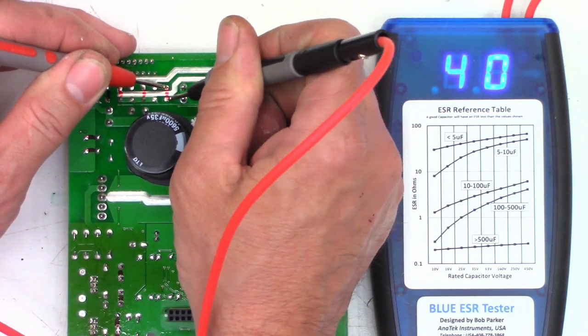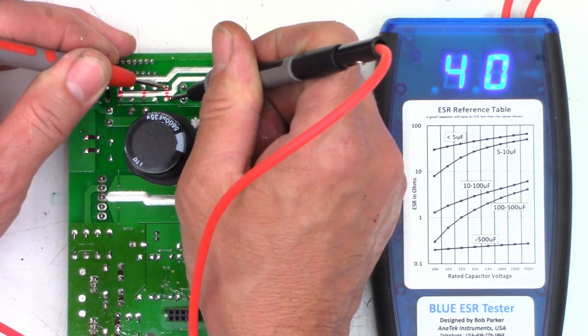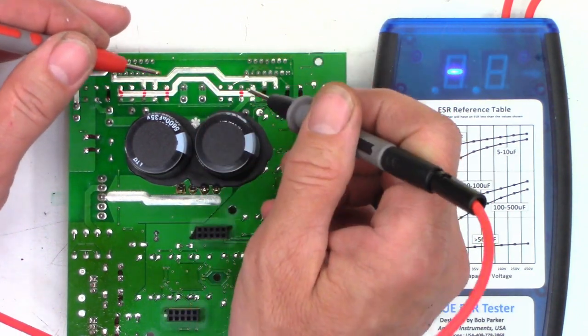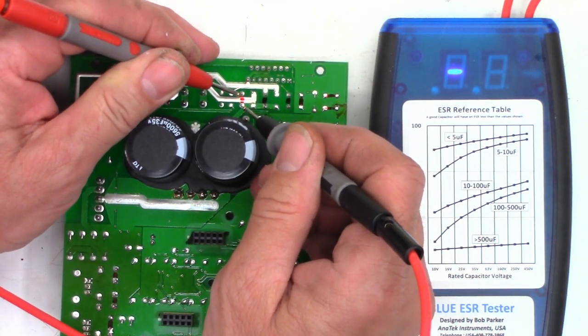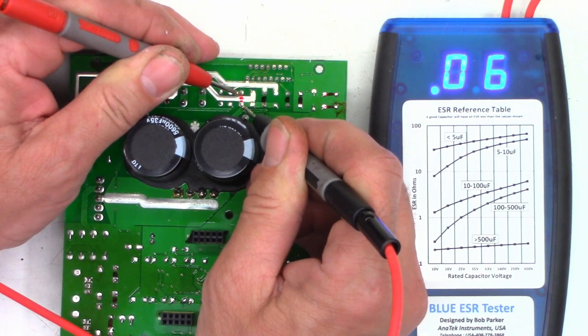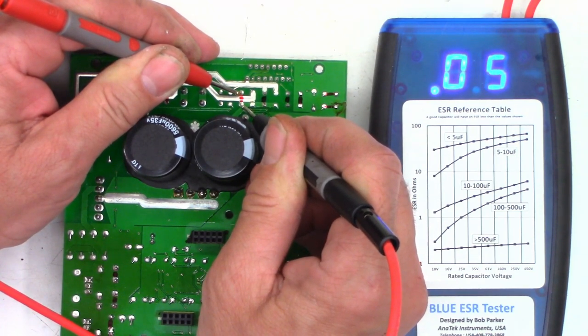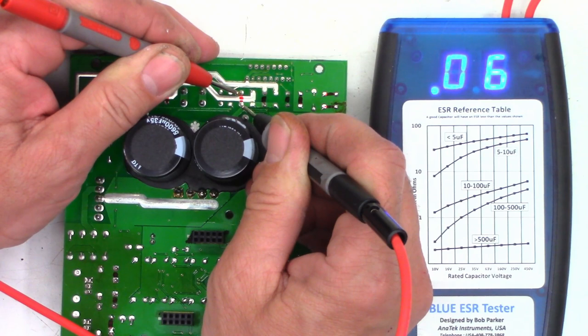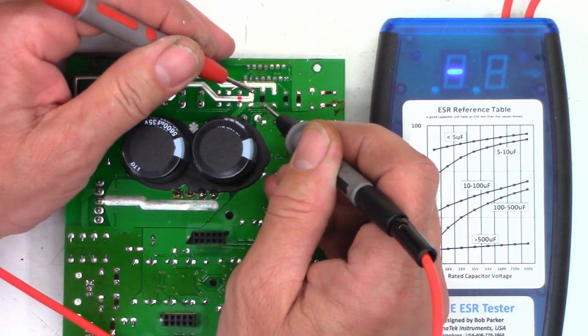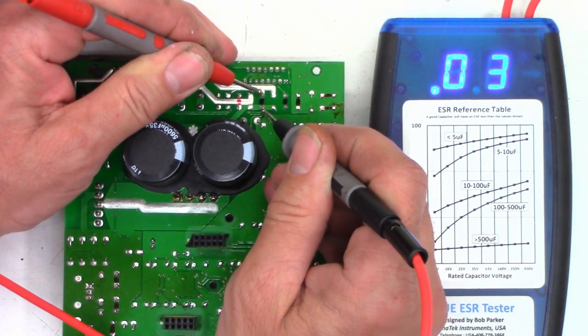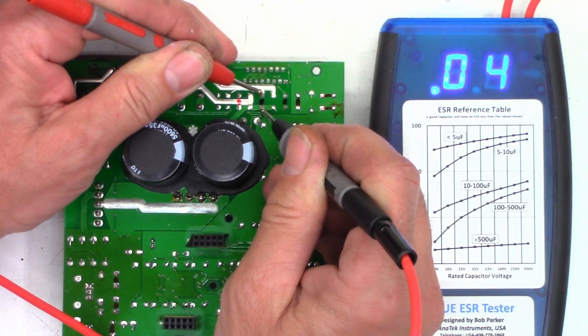And once again, 0.04, 0.05, good on that one. This one is a one and I see 40 ohms, that one is definitely bad. This is another 47 at 50, 0.04, 0.05, 0.05, 0.06, perfectly happy with that.